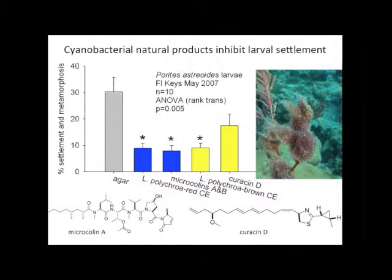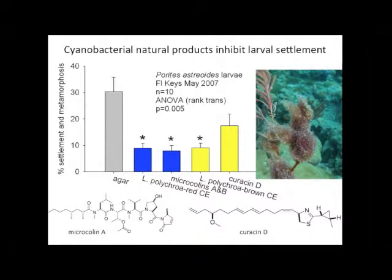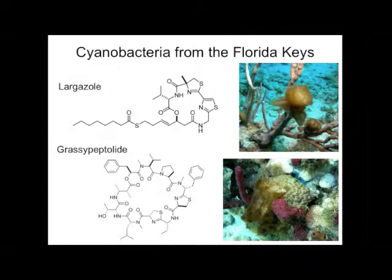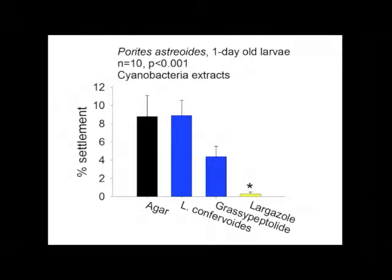Here are a couple more examples of our pure compound work. We contrasted an extract containing the microcolins — here's the structure of microcolin A — and both the extract and the pure compound relative to agar controls strongly inhibited settlement of the larvae. We also have a different species of Lyngbya that produces curacin D. Curacin D was not the only thing in that extract, so it didn't seem to explain all the effects, but you get some glimpses of the inhibitory effects of these compounds. With largazole, a very potent cytotoxin from the Florida Keys, there was a dramatic effect — in the presence of this compound, the larvae really didn't settle at all.